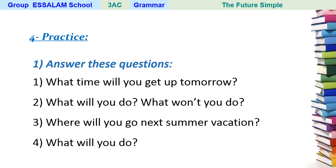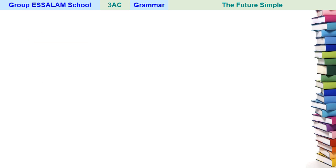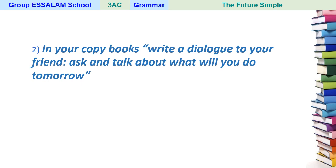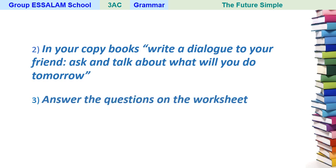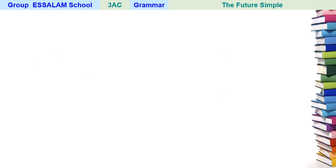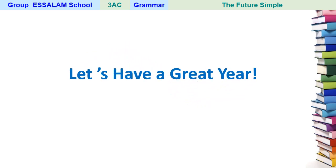Number four: What will you do? Now for the second activity — in your copybooks, write a dialogue with a friend talking about what you will do tomorrow. I'm going to check your copybooks after this period. Number three: answer the questions on the worksheet — I'm going to send you the worksheet and correct it. I wish you understood the lesson. Let's have a great year — goodbye!